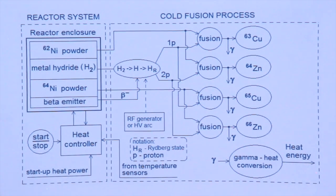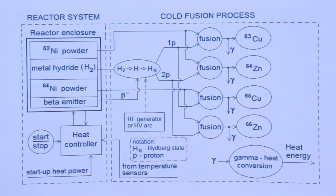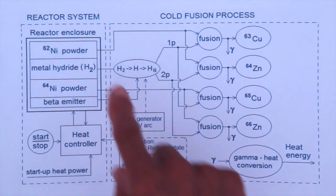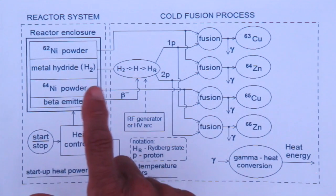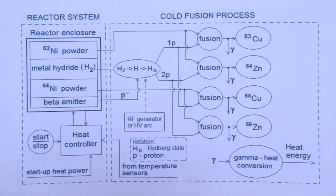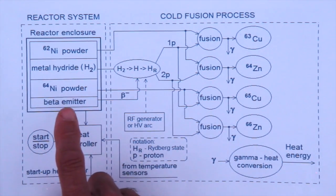This is the diagram I showed in the article, trying to show in an easier way the process of cold fusion. On this side is the reactor enclosure that contains nickel powder, metal hydride, and beta emitter. Here I show two isotopes of nickel powder: 62 and 64.